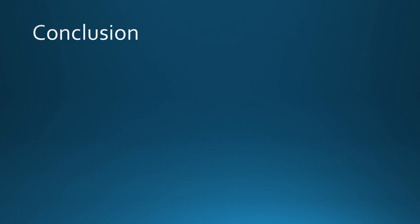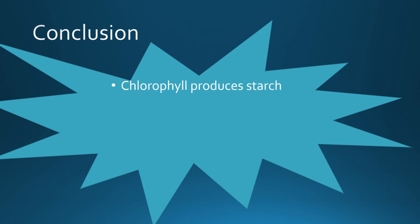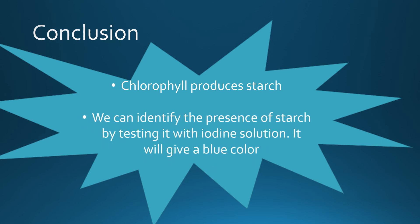What can you conclude? Think, then answer. Excellent — we conclude that chlorophyll produces starch, and we can identify the presence of starch by testing it with iodine solution, which will give a blue color if starch is present. I want you to copy the conclusion and the questions in your copy book. If you have any questions, don't hesitate to contact me. Bye!